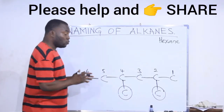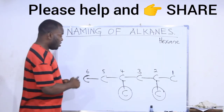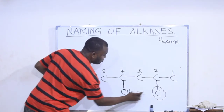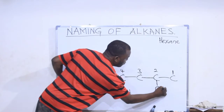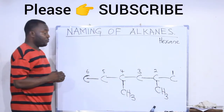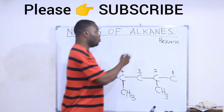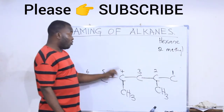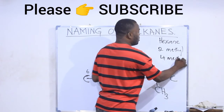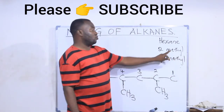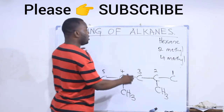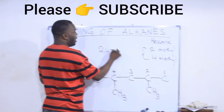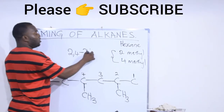Now let's write the name. These attachments are methyl groups — CH3. From the original compound, both branches are CH3. We have a methyl group at position two and a methyl group at position four. Since both are methyl groups, we can combine them: at positions two and four we have two methyl groups, so we say dimethyl — 'di' meaning two.